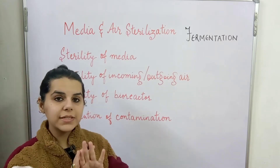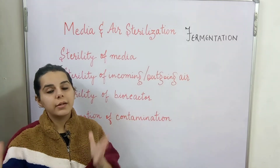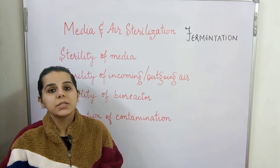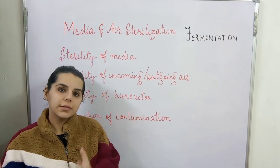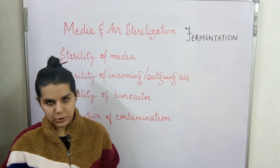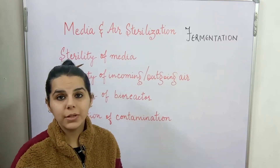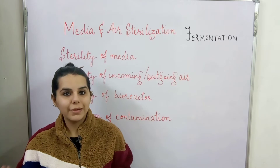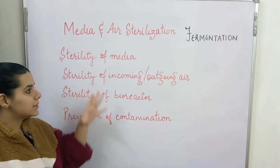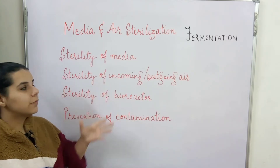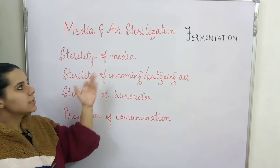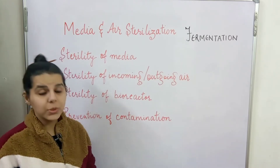Fourth is prevention of contamination. Once all the sterilization steps have been done, it is very important to prevent further contamination. For a successful fermentation process, the product has to be free of contamination, because if microorganisms are present, the desired result will not be attained. We can divide these into a few factors and discuss how each is sterilized.